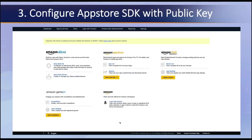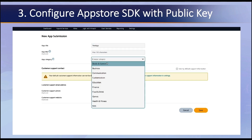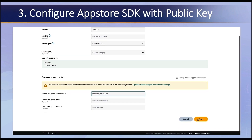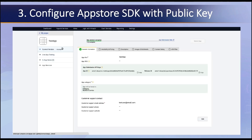The third step is to configure the App Store SDK with your public key. If you're an existing developer, create a new version of your app. If you're a new developer, head to the developer portal and with your developer account, create a new app and fill in the required fields as shown on screen. Click save and once it's created a new version of your app, head over to the APK files tab.